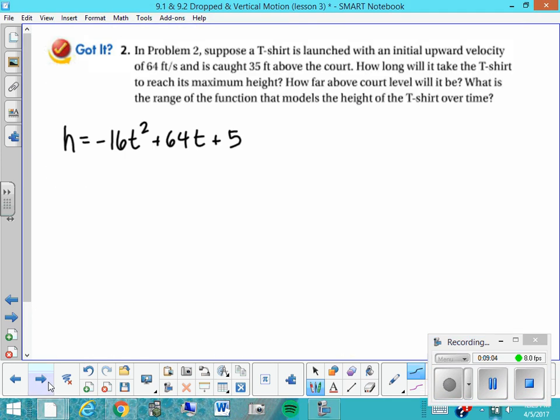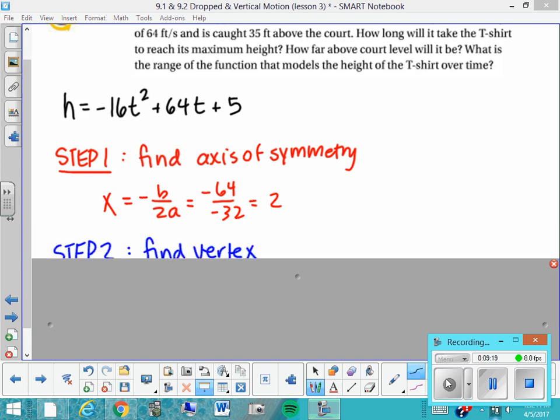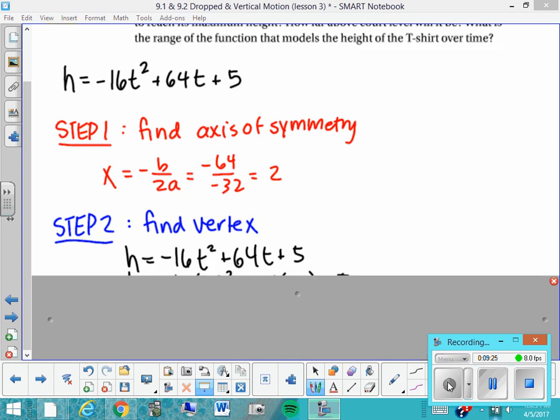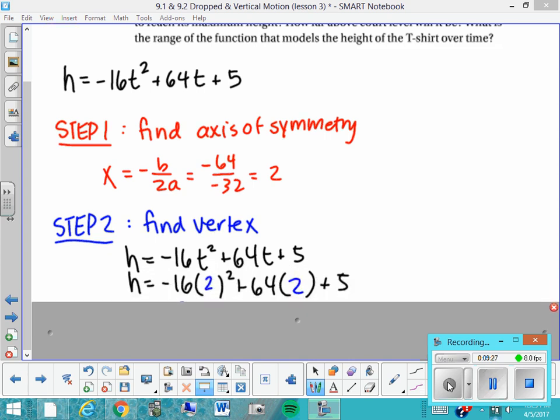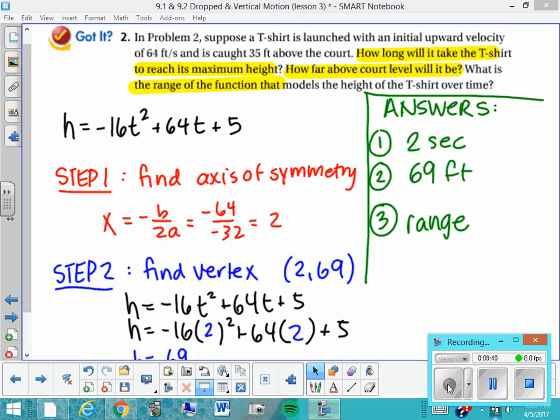Let's have you try one. So if you're feeling confident, you can press pause and try this on your own. It's a very similar problem. I've copied the equation down for you. And if not, you can work on it with me. Okay, so there was my step one to find the axis of symmetry. You can see me do that using the formula. And step two is going to be to find the vertex. Okay, in order to find the vertex, I'm going to plug into the formula where t equals 2. Do some calculation, and I realize that the height is 69, so the vertex is 2, 69. So I realize that after two seconds the t-shirt will reach its maximum height at 69 feet.